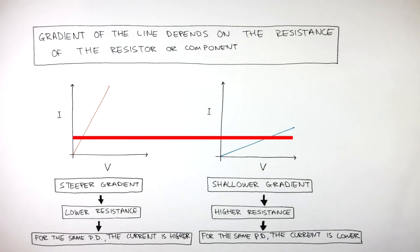This red line has been inserted into the graphs to show how, for the same current to be achieved on both conductors, the graph on the left requires a lower potential difference. This means less energy has been needed to force the electrons through the metal wire.